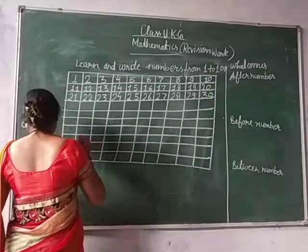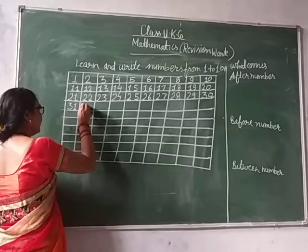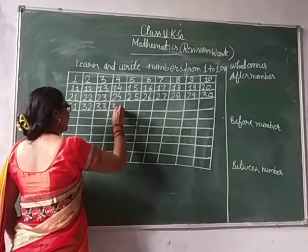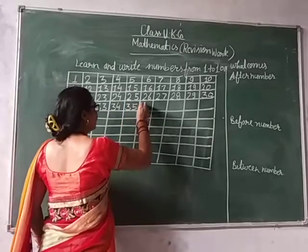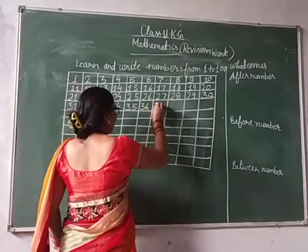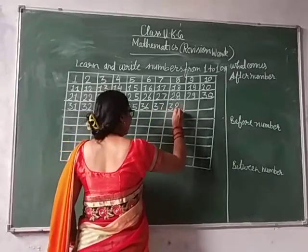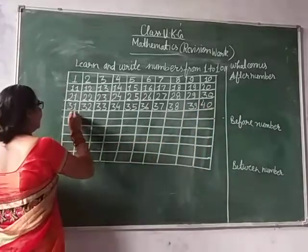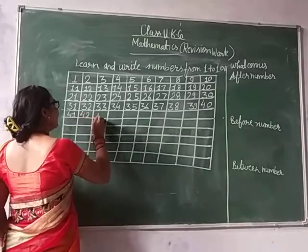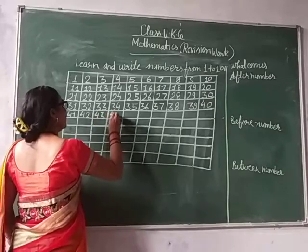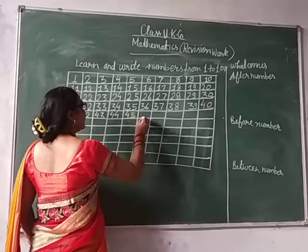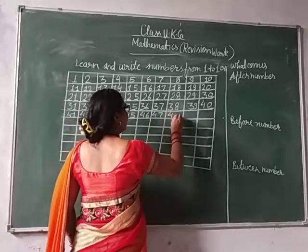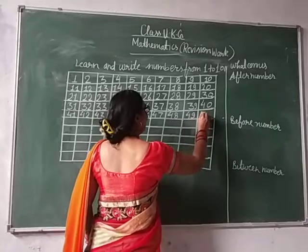Thirty - 30, thirty-one - 31, thirty-two - 32, thirty-three - 33, thirty-four - 34, thirty-five - 35, thirty-six - 36, thirty-seven - 37, thirty-eight - 38, thirty-nine - 39, forty - 40, forty-one - 41, forty-two - 42, forty-three - 43, forty-four - 44, forty-five - 45, forty-six - 46, forty-seven - 47, forty-eight - 48, forty-nine - 49, fifty - 50.